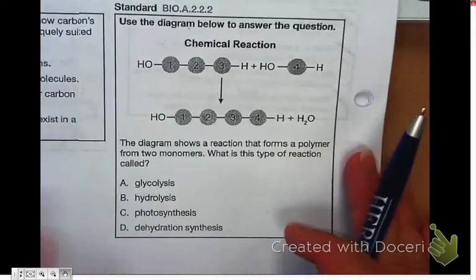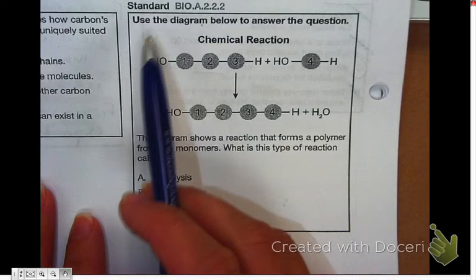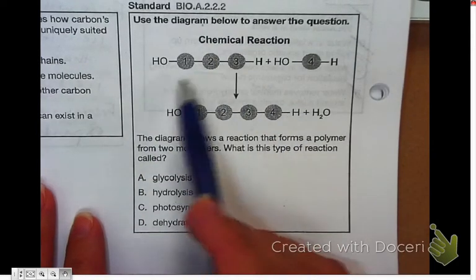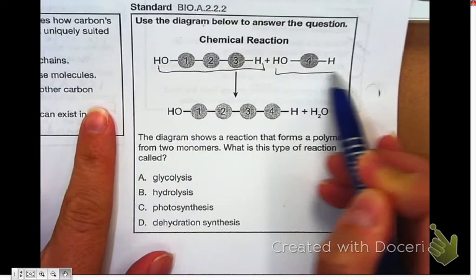Let's move over to the second question, which is using the diagram below to answer the question. We have a chemical reaction. We see one part here, we see another part here, coming to make one big molecule.